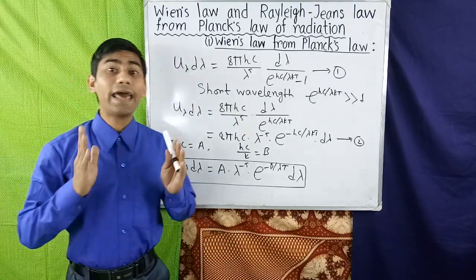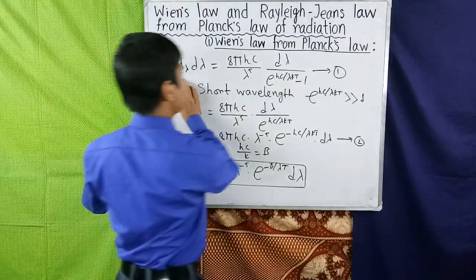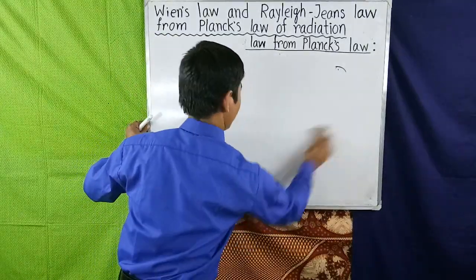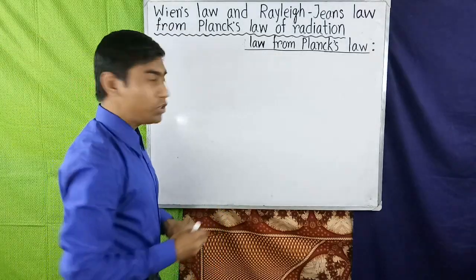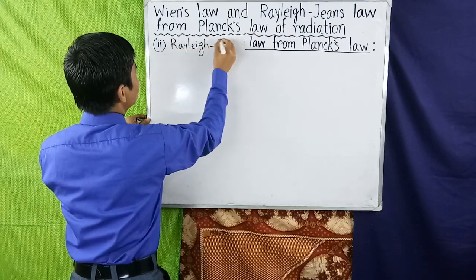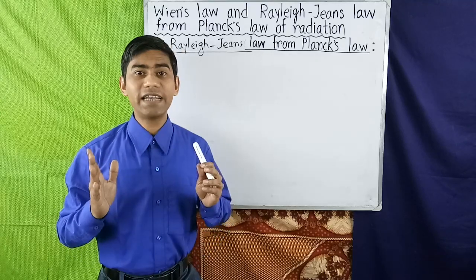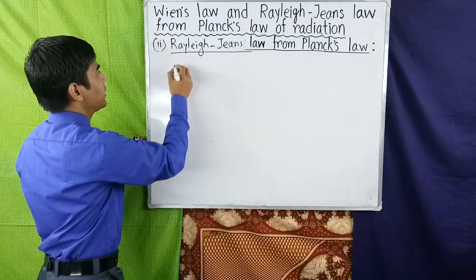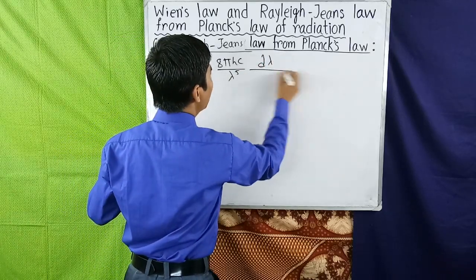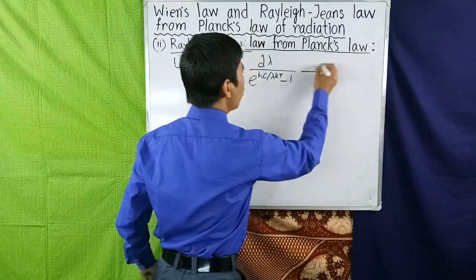Now we derive Rayleigh-Jeans law from Planck's law of radiation. Again we start with Planck's radiation law, which in terms of wavelength is: u(λ) dλ = (8πhc / λ⁵) × dλ / (e^(hc/λkT) − 1). Suppose this is equation 1.